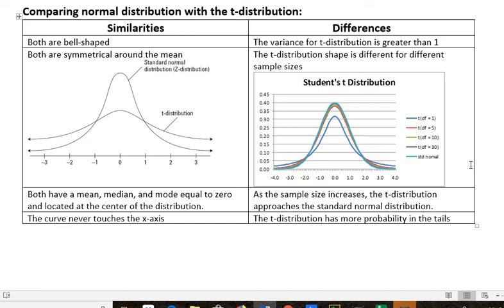And the T distribution has more probability in the tails. That's a difference too. There's a little more probability in the tails with the T distribution. All right. Have a fantastic day. We'll see you next time.